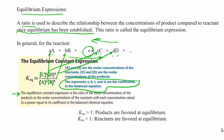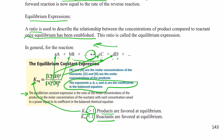When this equilibrium constant KEQ becomes bigger than one, that means the numerator is bigger than the denominator — we say that products are favored in this reaction, and we have more product relative to reactant. When the equilibrium constant is smaller than one, the numerator is smaller than the denominator, so we don't have as much product as reactant, and we say that the reactants are favored in that situation.